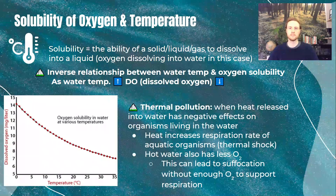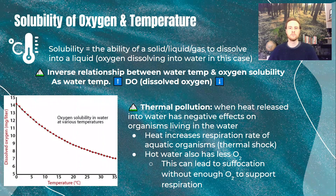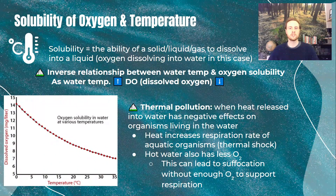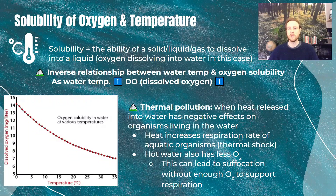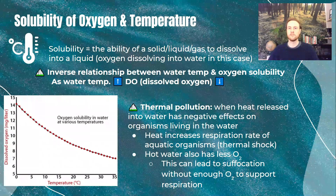What does this mean for aquatic ecosystems? This demonstrates how thermal pollution can occur. When hot water is released into a cooler body of water, it raises the temperature and therefore lowers the dissolved oxygen level. Organisms living in that water will experience an increase in their rate of respiration — they try to pass water over their gills more frequently to extract as much oxygen as possible. With less oxygen available, that increased respiration rate causes physiological stress, and if dissolved oxygen gets low enough, organisms can suffocate and die.